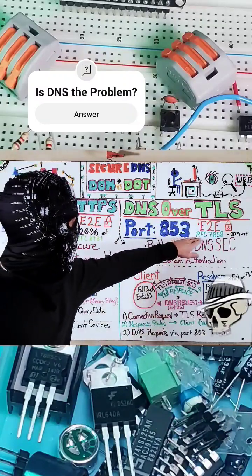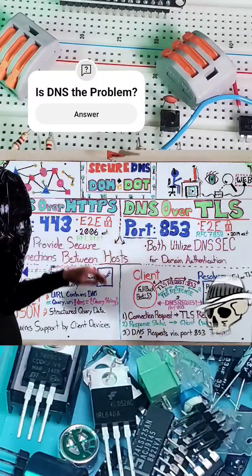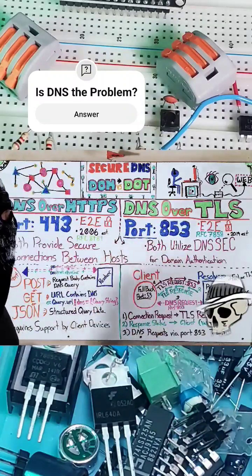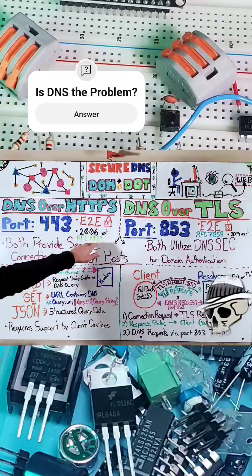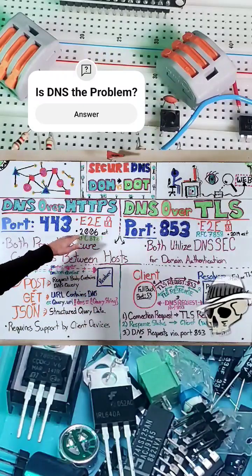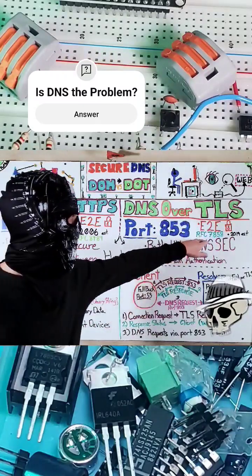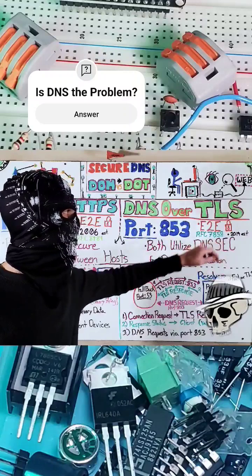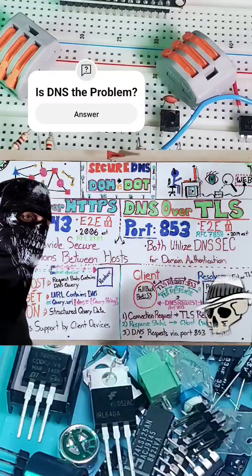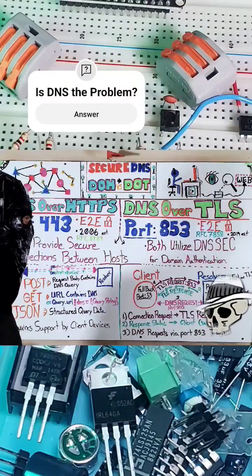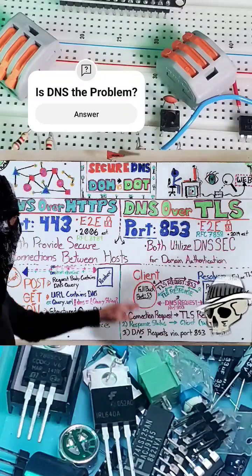These two protocols both have official established RFCs. DNS over HTTPS is RFC 8484, established in 2018, and DNS over TLS is RFC 7858, established in 2016.